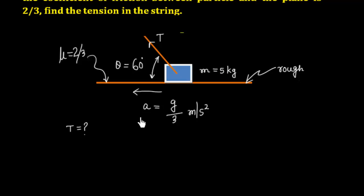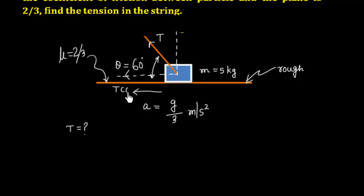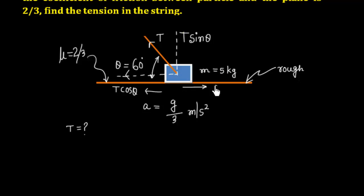We need to break the tension into two components: vertical and horizontal. In the horizontal direction, the component of tension is T cos theta. In the vertical direction, the component of tension is T sin theta. Since the block is moving horizontally, friction acts in the opposite direction.